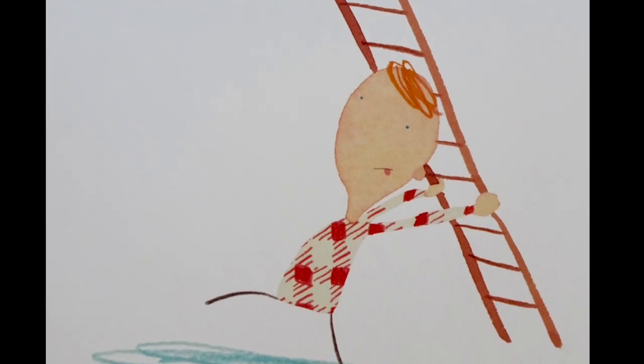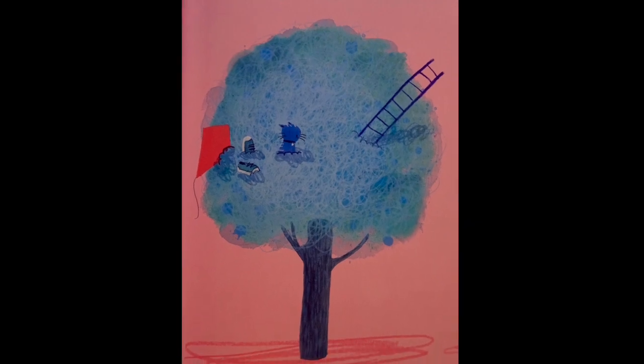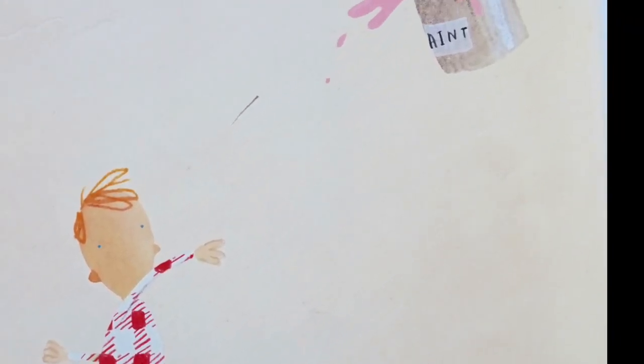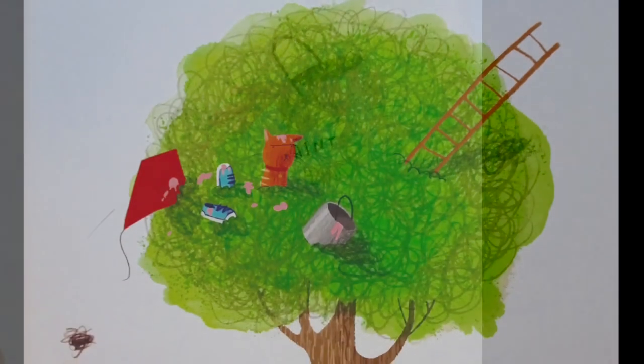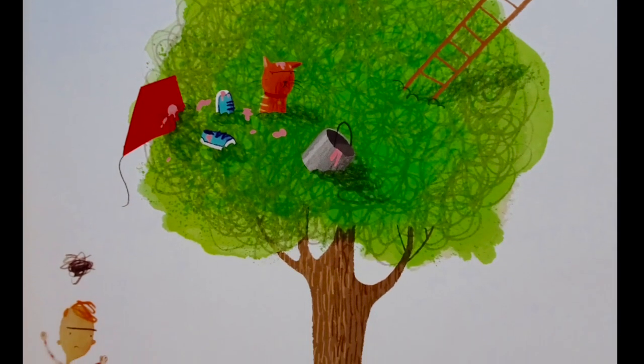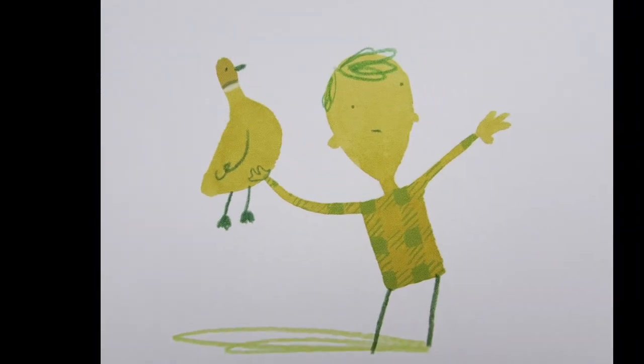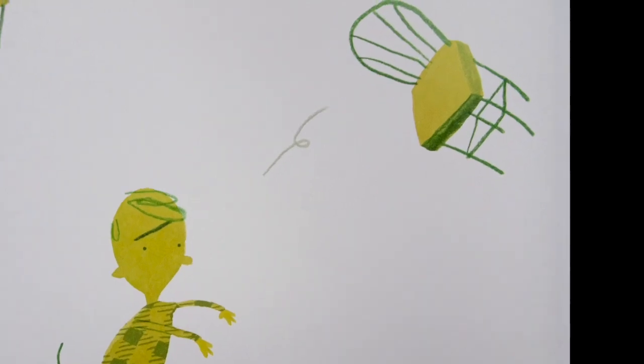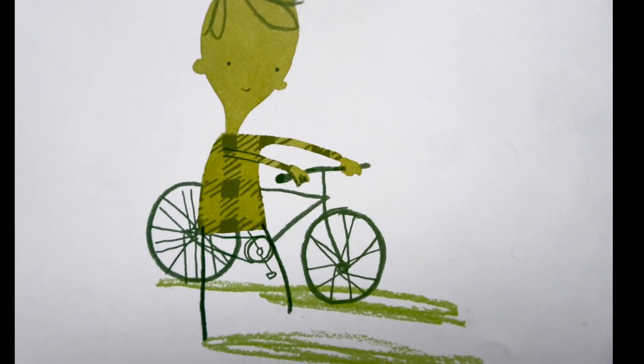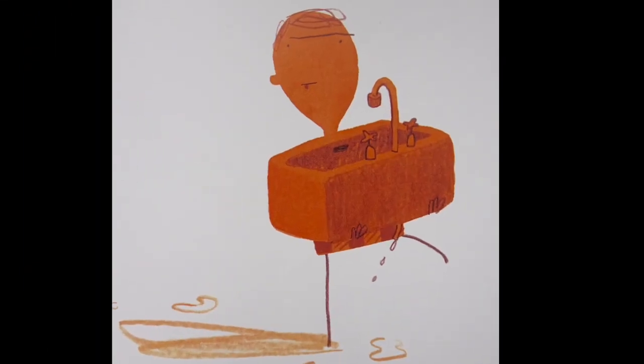Well, he threw it up in the tree and guess what happened? It got stuck. The ladder was borrowed from a neighbor who would definitely want it back, so to get it back Floyd threw a bucket of paint up at it and wouldn't you know the bucket of paint got stuck. Then Floyd tried a duck to knock down the bucket of paint.